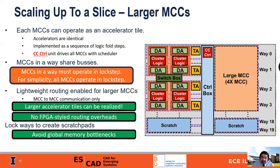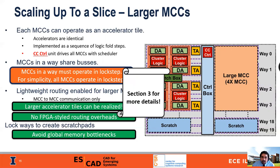First, we add some lightweight routing to enable communication between neighboring micro-compute clusters only. Note that unlike an FPGA, this does not incur large overheads because we don't have wires ranging from one side of the chip to the other. Therefore, we can create a larger accelerator tile by grouping together multiple micro-compute clusters. Next, we allow for ways to be locked and set as scratch-pad space, mainly for avoiding global memory bottlenecks. Please look at section 3 in our paper for more details about how we construct these micro-compute clusters.